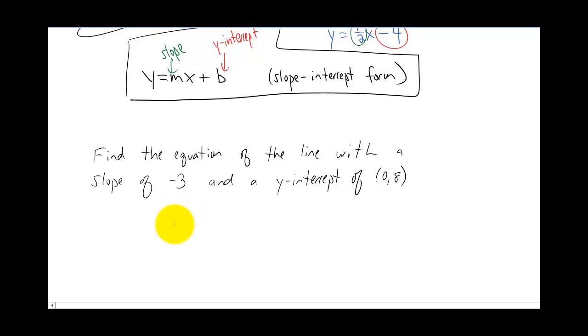Alright, so this is just like the last problem. Y and x are going to stay in the equation. But right here in front of the x, we're going to put the slope, which happens to be negative three in this case. And right here, we're going to put the y-value of the y-intercept, which in this case happens to be eight.